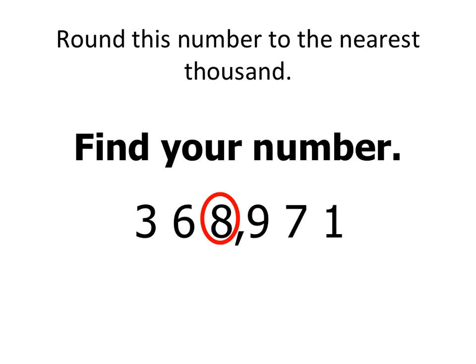Let's try this one. Let's round 368,971 to the nearest 1,000. If I find my 1,000th place, I look next door to the 9. I think, if it's less than 4, just ignore. But 9 is more than 4.